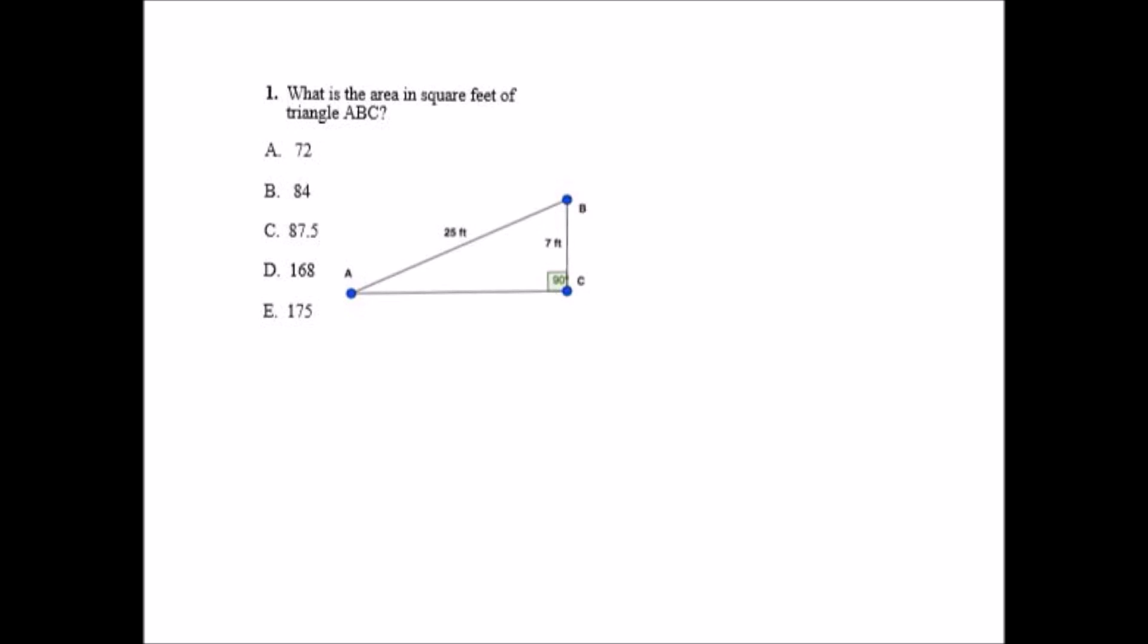Question 1 asks us what is the area in square feet of triangle ABC. We are going to use Pythagorean Theorem, A squared plus B squared equals C squared. Here it's given us A and it's given us C, what we don't have is B.